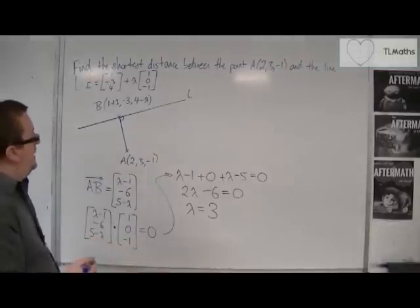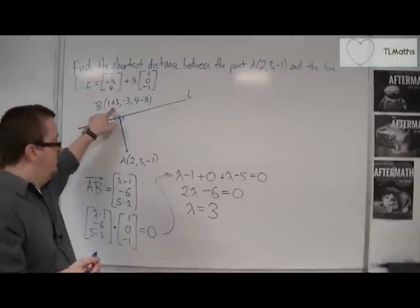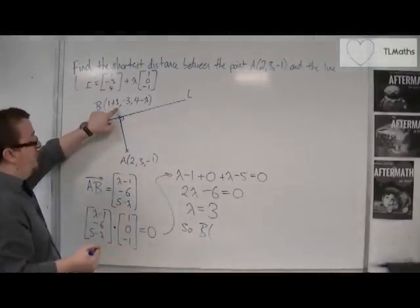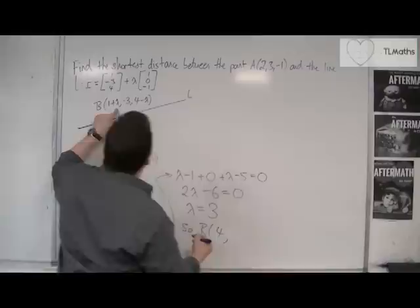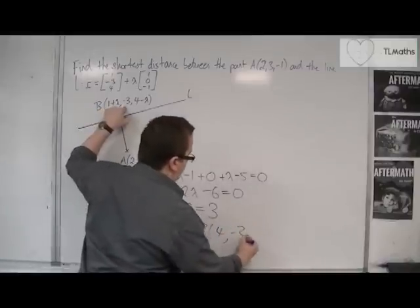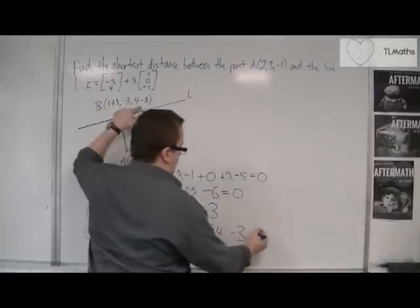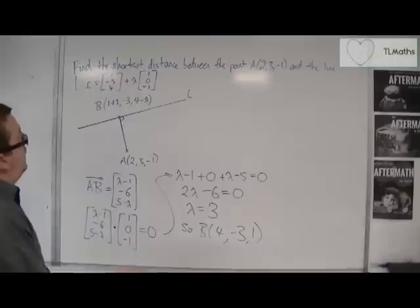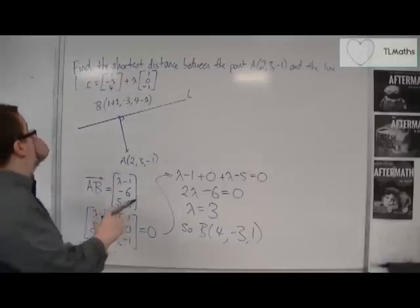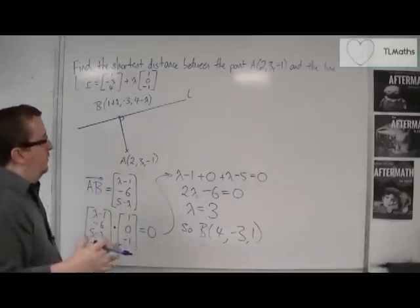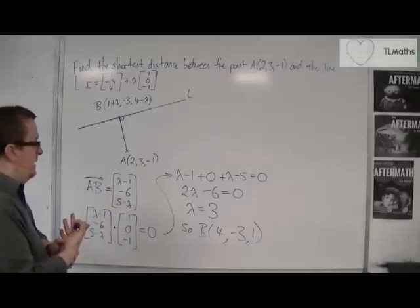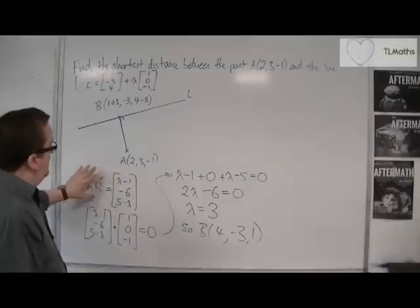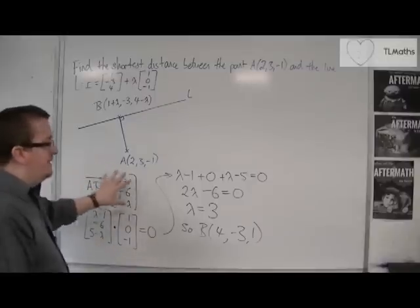Lambda equals 3 tells me the coordinates of B. So B has coordinates 1 plus 3, minus 3, and 4 minus 3. Now I want to find the actual shortest distance between A and B — effectively, the length of the vector AB.